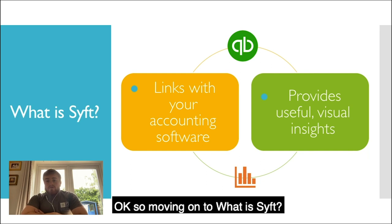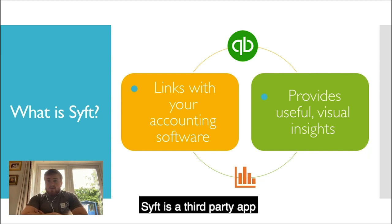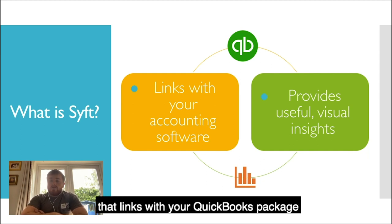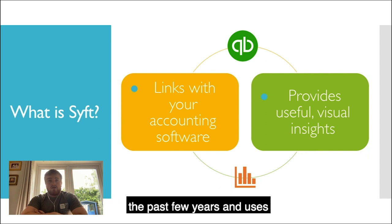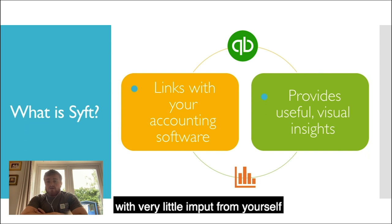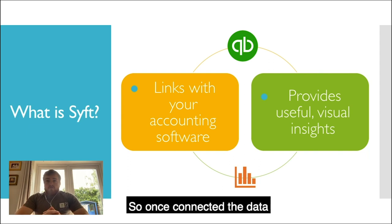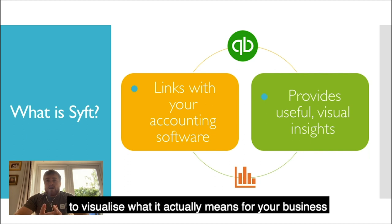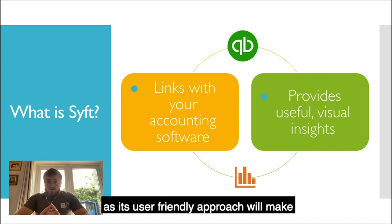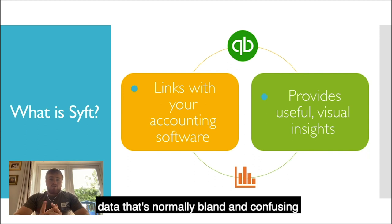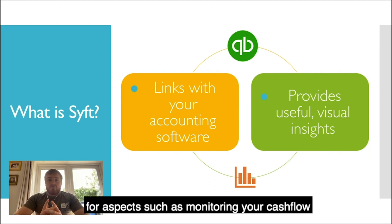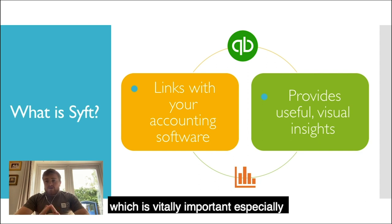Moving on to what is SIFT. SIFT is a third-party app that links with your QuickBooks package and pulls in all of the data from the past two years, using this data to produce useful insights from very little input from yourself. Once connected, the data pulled in will allow you to visualise what it actually means for your business, as its user-friendly approach will make data that's normally bland and confusing much more interesting and useful for aspects such as monitoring your cash flow, which is vitally important especially at this current time.